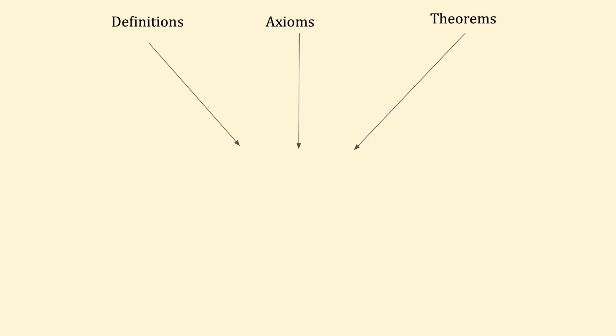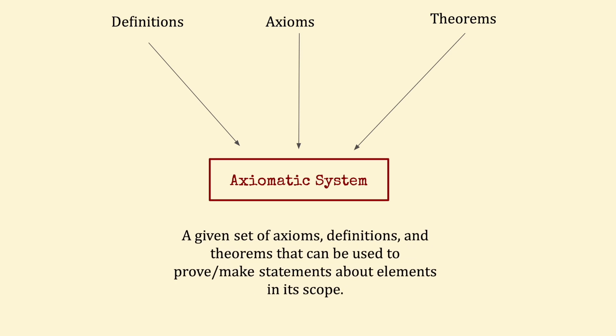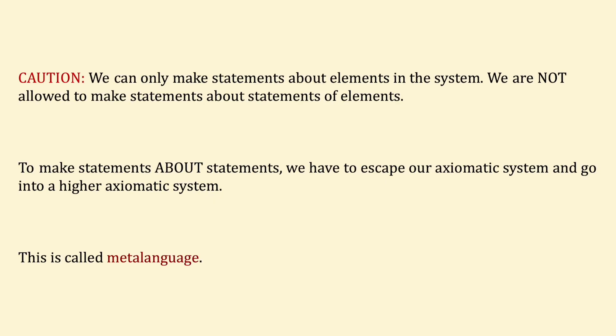For example, we have the third equidistance theorem, which we usually prove with the axiom of side-angle-side. Now, a set of definitions, axioms, and theorems can construct an axiomatic system, which we can use to prove and make statements about elements in its scope. It does have its restrictions though — we can only make statements about elements in our system, not statements about statements of elements. In order to do that, we have to escape our axiomatic system and go into a higher axiomatic system, and this is called meta-language.